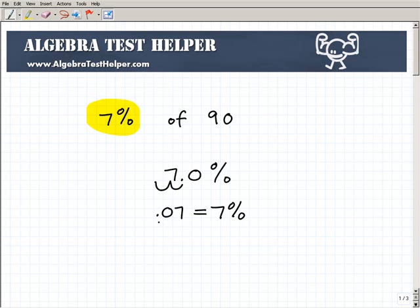If I move the decimal point back over two spaces to the right, I'd get back to 7%. So that's the biggest core skill that you need to know, how to write a percent as a decimal. Let's take a look at some other examples.